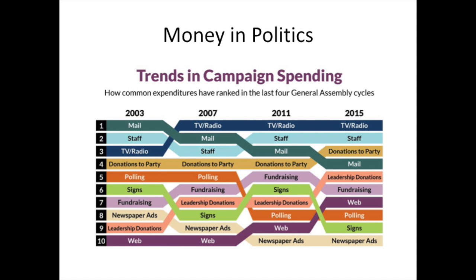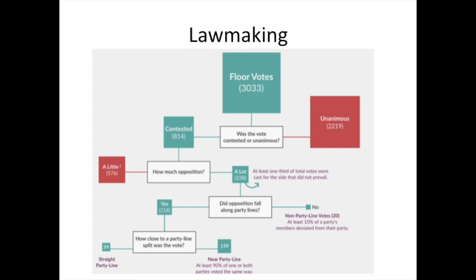We have on our site a way to look at all the bills in the General Assembly — you can search them by topic. The point is that most floor votes that reach the floor are unanimous, and very few are actually contested along the way. That's one thing to help students understand — not every bill in the General Assembly even has one single vote against it. What does that mean?